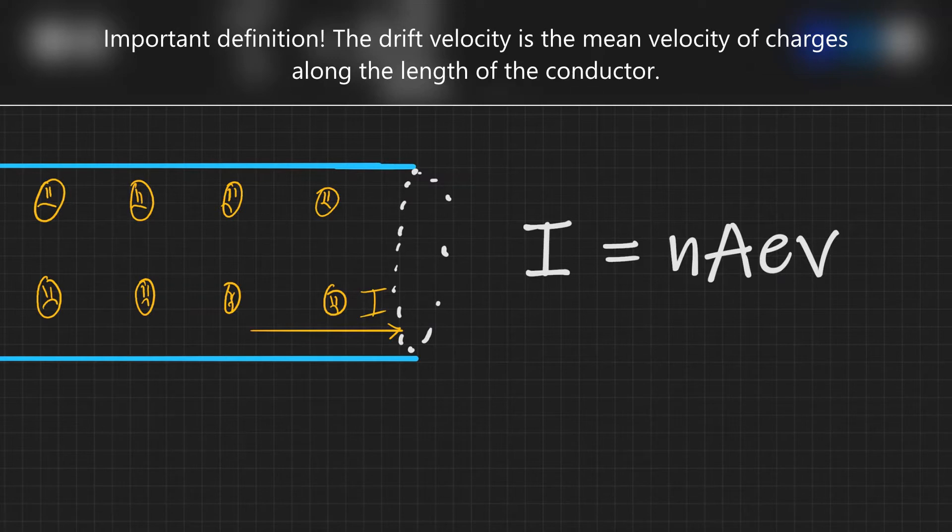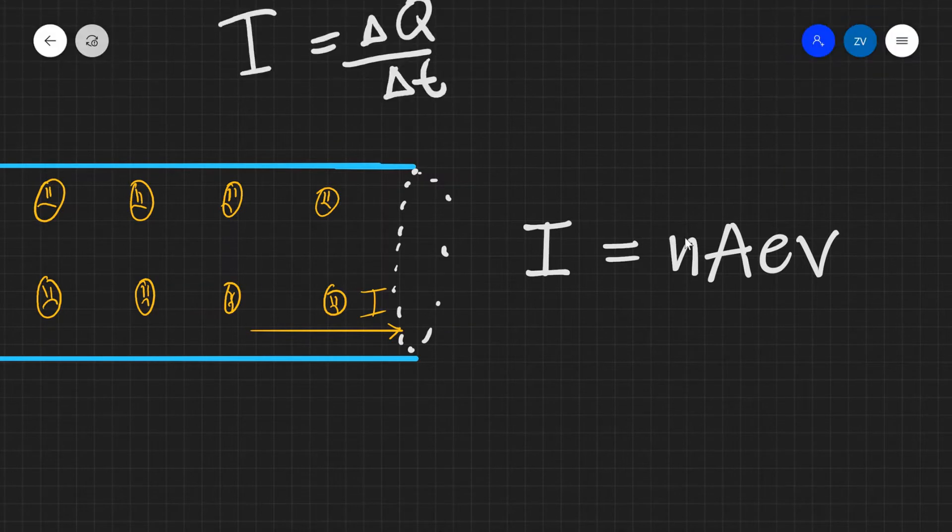The reason for that is that the electrons are also in a constant vibrational motion due to their thermal properties essentially. However on average they are drifting along the direction of the current. So once again the drift velocity is the velocity at which the electrons are moving along the wire.